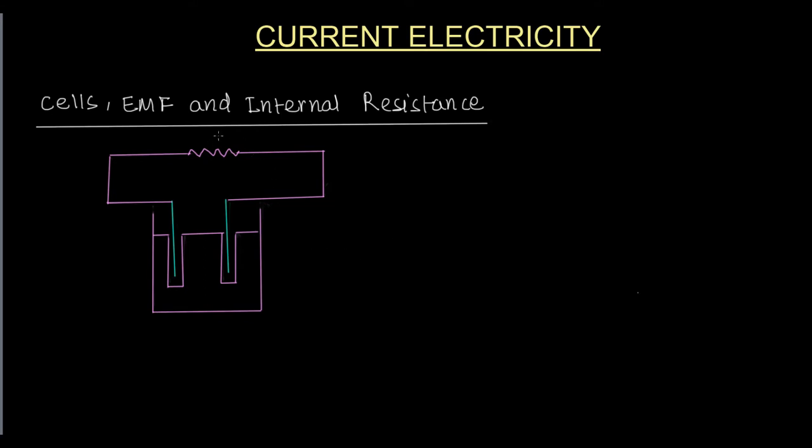So this is how a cell looks like, and let us say this is its positive terminal and this its negative. Then a cell has its own internal EMF that we normally designate by E.